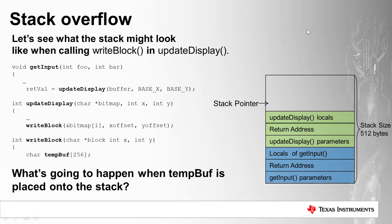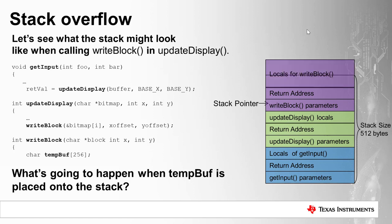Stack overflow occurs when the stack is too small. The stack stores the context for each function call. In this code example, getInput puts its parameters, return address, and locals on the stack; it calls updateDisplay, which does the same; updateDisplay then calls writeBlock. WriteBlock puts its parameters and return address on the stack and creates a large local variable called tempBuff. As we can see, tempBuff has now gone past the end of the stack, and any data in memory past the end of the stack will be corrupted.